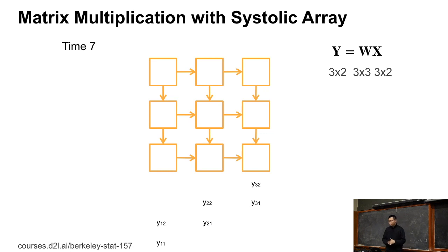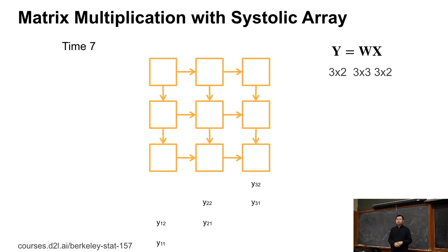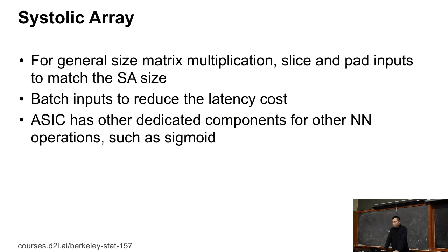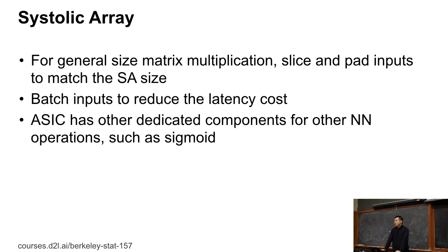In deep learning, W is typically the weight matrix or convolutional kernel, and we feed different X inputs to compute outputs. Usually the number of rows of X corresponds to the number of examples, which can be very large. For general-size matrix multiplications, we pad zeros and slice matrices into fixed sizes to fit the systolic array. For a 3×3 array, latency is 7, but with many batched inputs, throughput is very high.